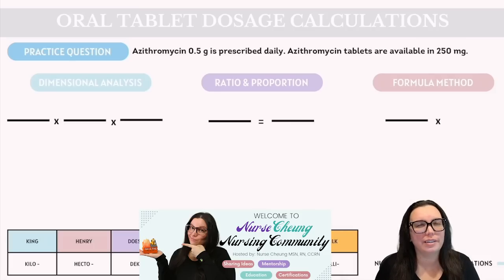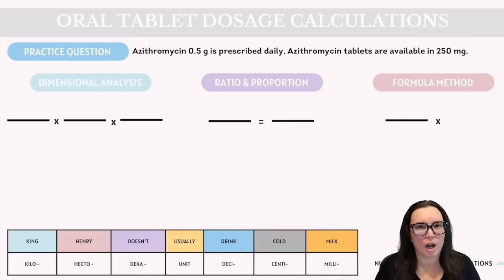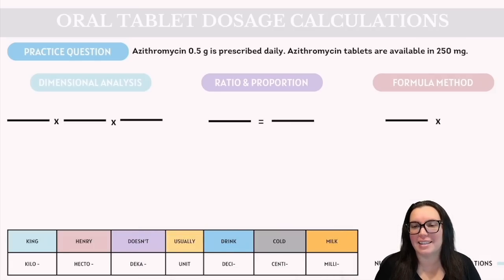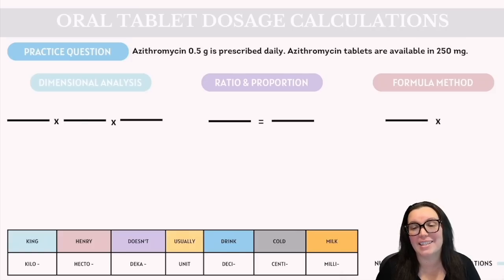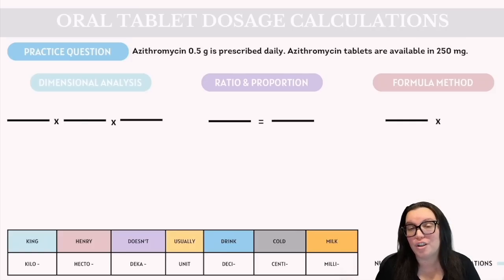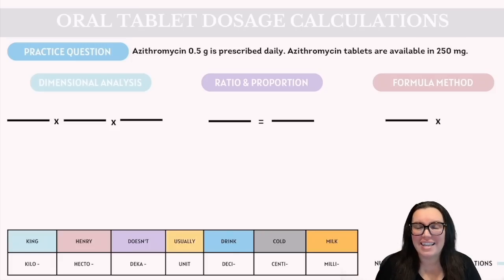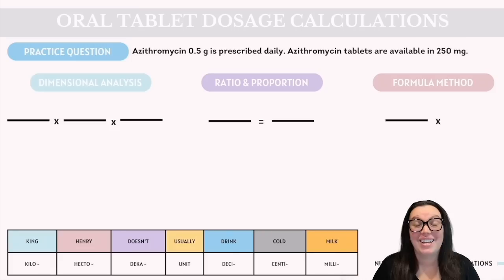Now we transition to more complicated problems. This problem states we need to give azithromycin 0.5 grams daily as prescribed, but azithromycin tablets are available in 250 milligrams. That means we're going to have to do some metric conversions.